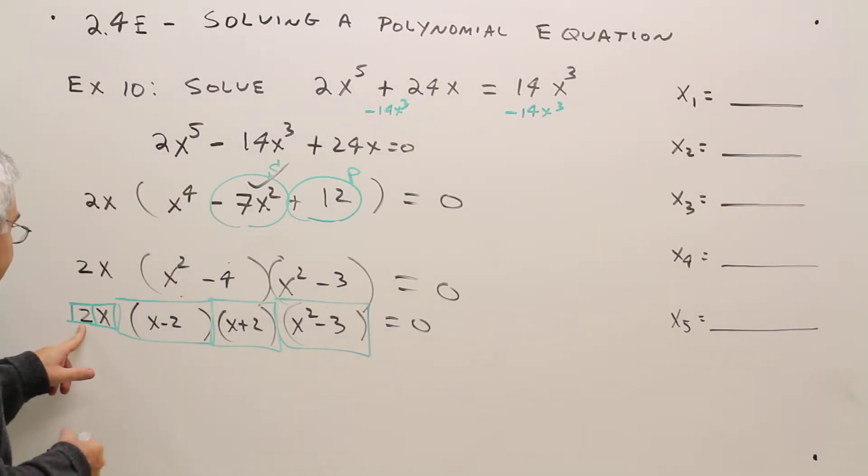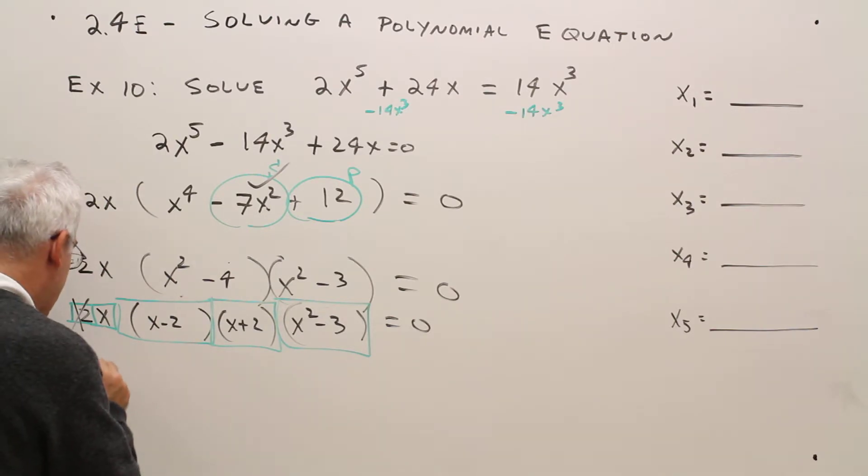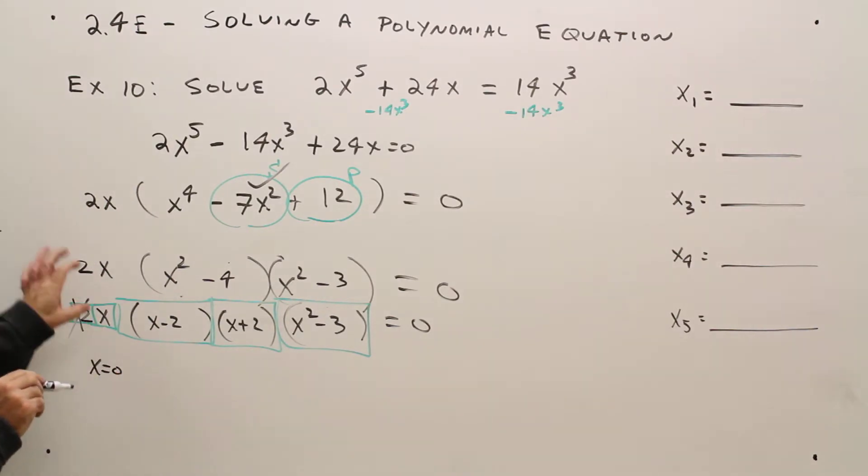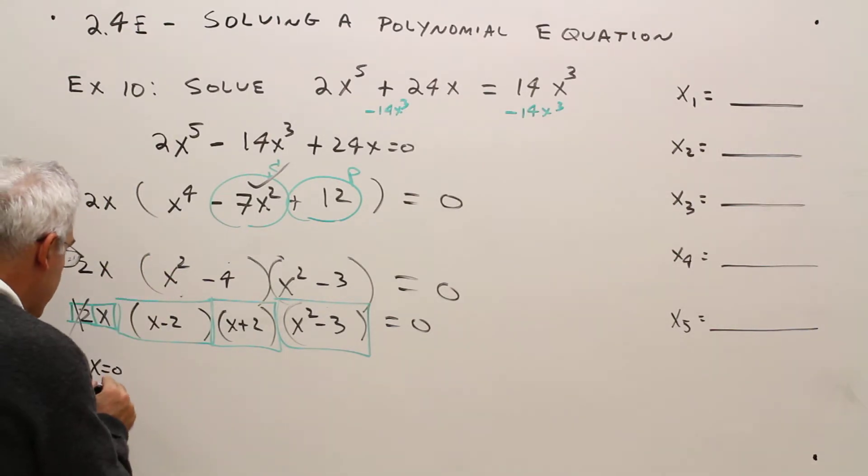Well, 2 will never be zero, so I can kind of disregard that. Oh, x sub 1 is zero. I really just have x equals zero. I just set that chunk equal to zero.